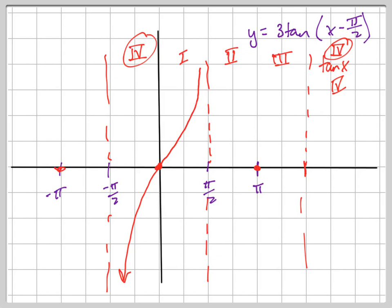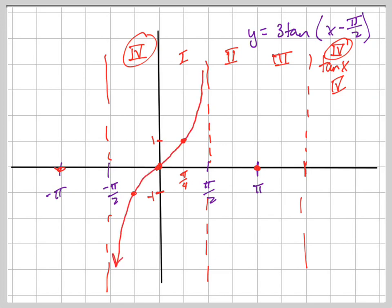To be exact, you can put a point right here and a point right there — a lot of times teachers will want you to do that — because that's where it equals 1 or negative 1. This is your pi over 4 point, where sine and cosine are equal to each other, so 1 and negative 1 are your points there. So your graph goes like this for your typical tangent graph.